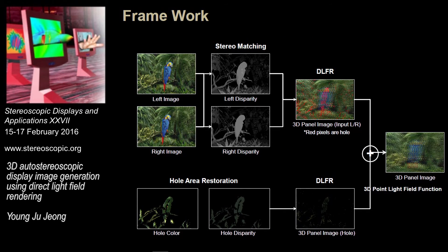This slide shows the framework of the proposed algorithm. From the left and right images, the disparity map is estimated. From it, we generate the 3D panel image directly. Since hole regions can occur, we first estimate the hole region, restore the hole region's texture and disparity, and use the color and disparity for the hole region to generate the display image. Then combining these two images, we can simply obtain the 3D panel image.